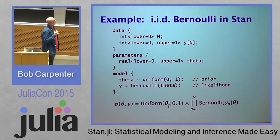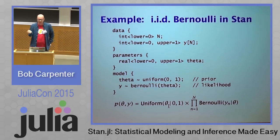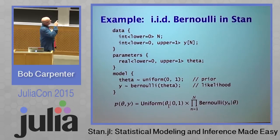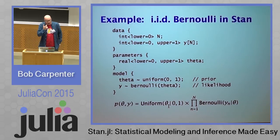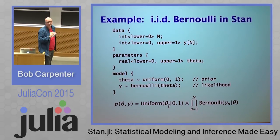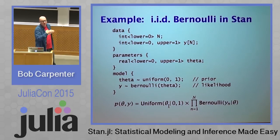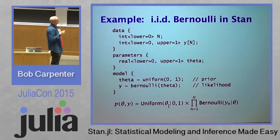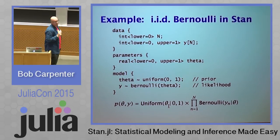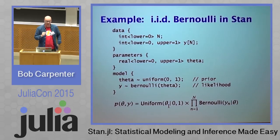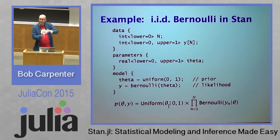The parameter for this model is theta, which is the probability of getting a 1 for one of the data points, constrained to have a lower bound of 0 and an upper bound of 1. The data is binary observations — n observations, each an integer between 0 and 1. The model gives you a prior and likelihood: theta has a uniform distribution as the prior, and the likelihood is a vectorized form saying the members of y have a Bernoulli distribution. So the point of Stan is you declare the data, declare the parameters with their constraints, and declare the model — and that together defines a density function.